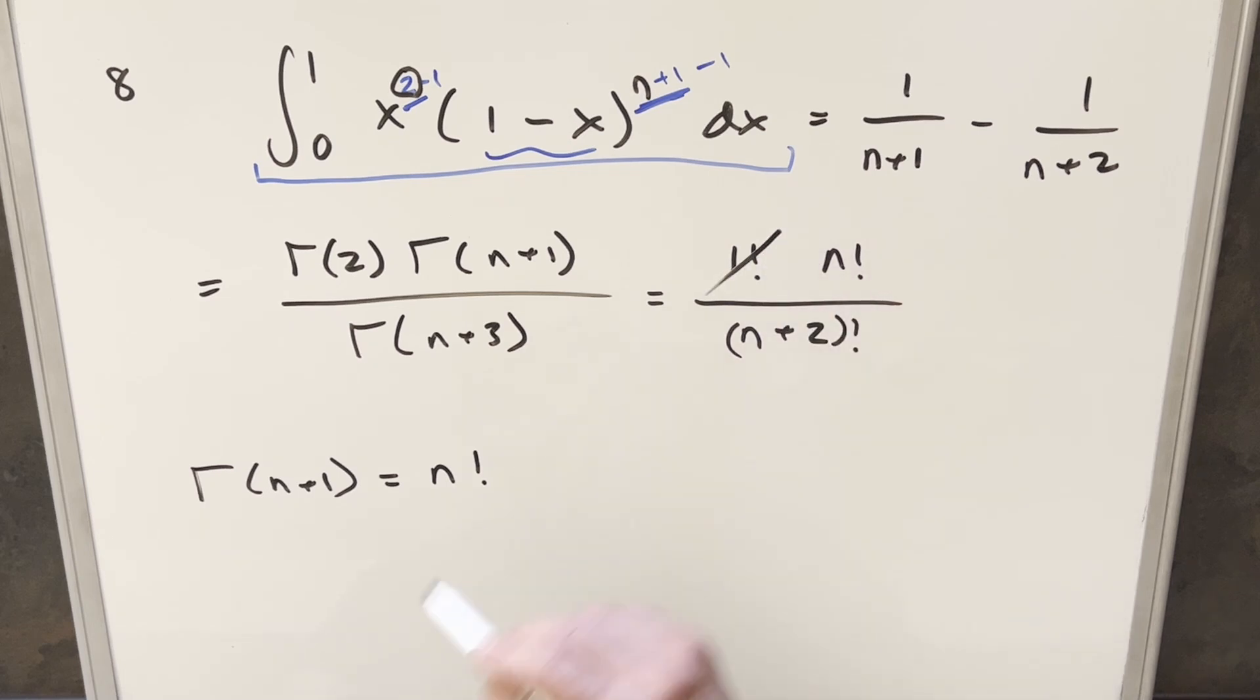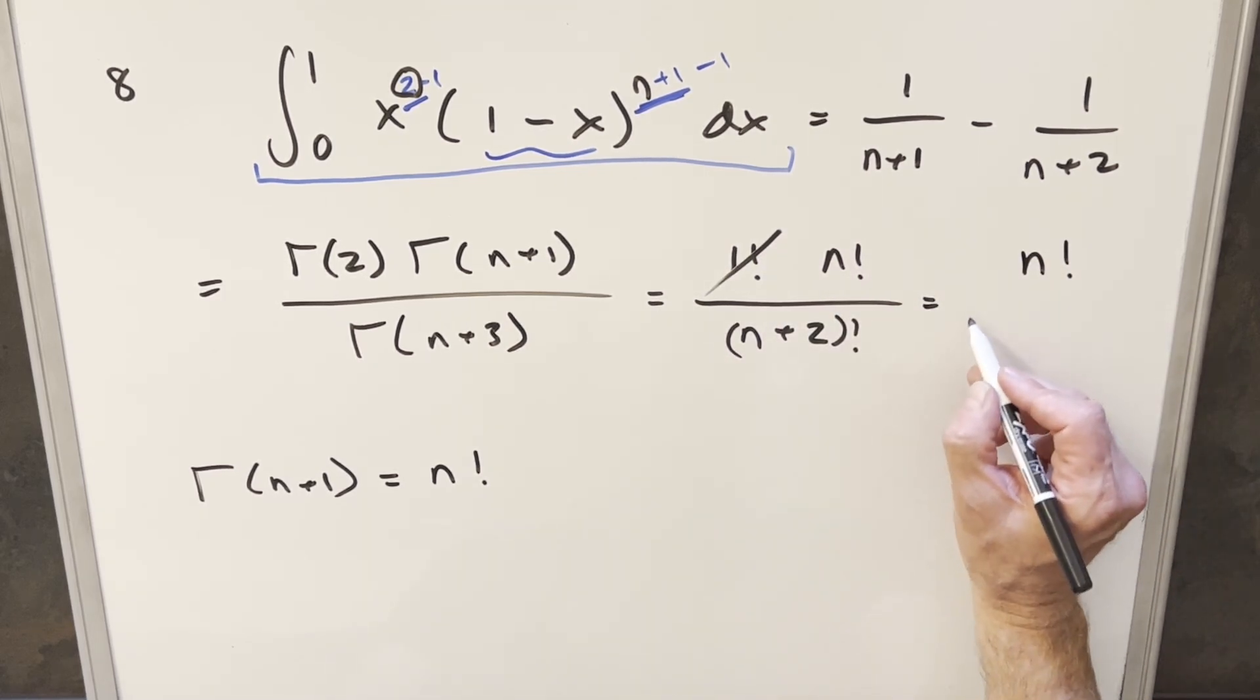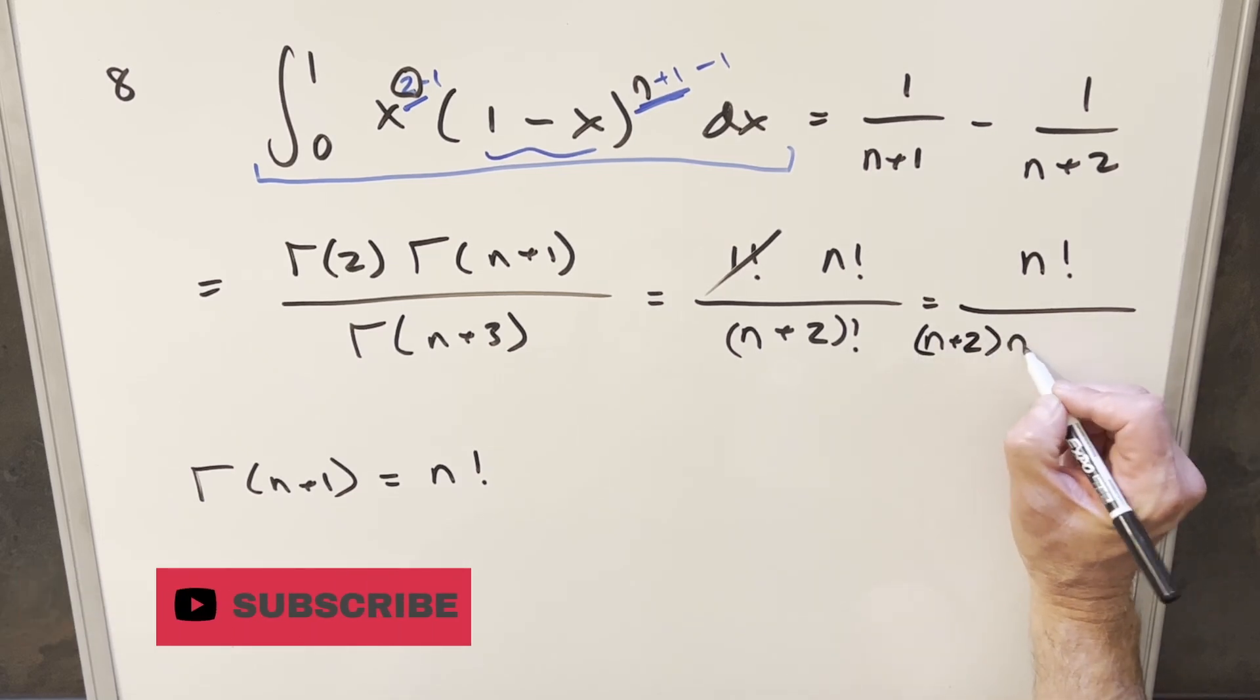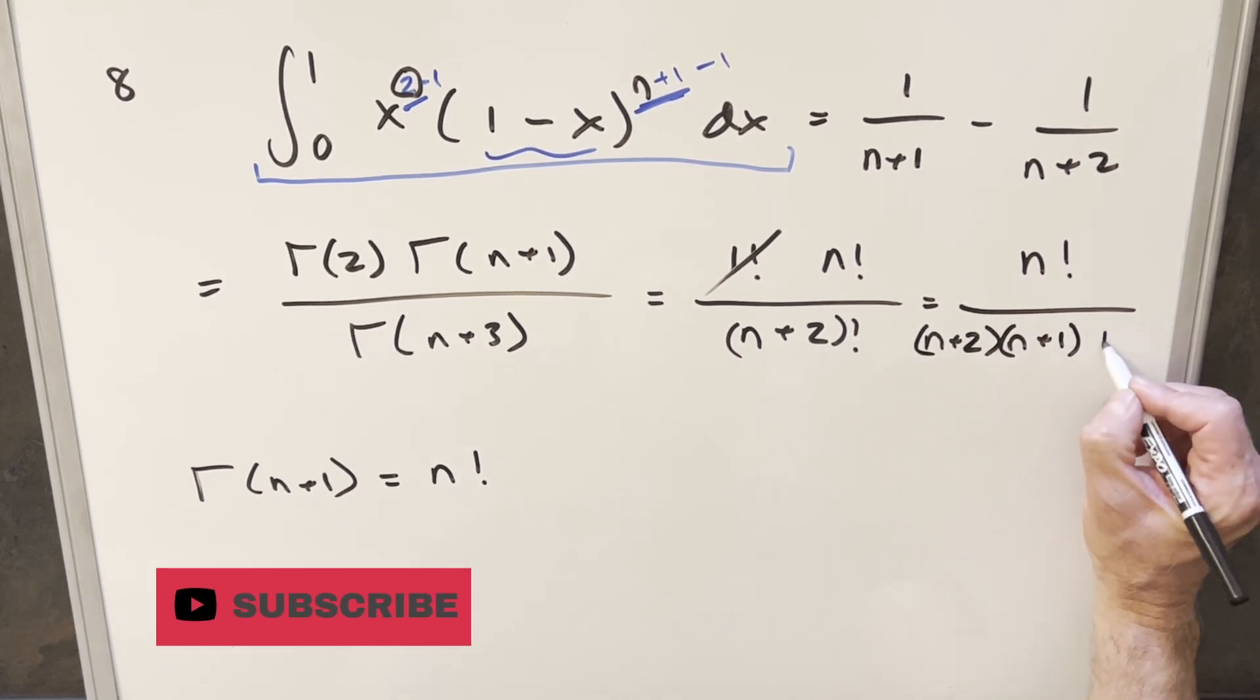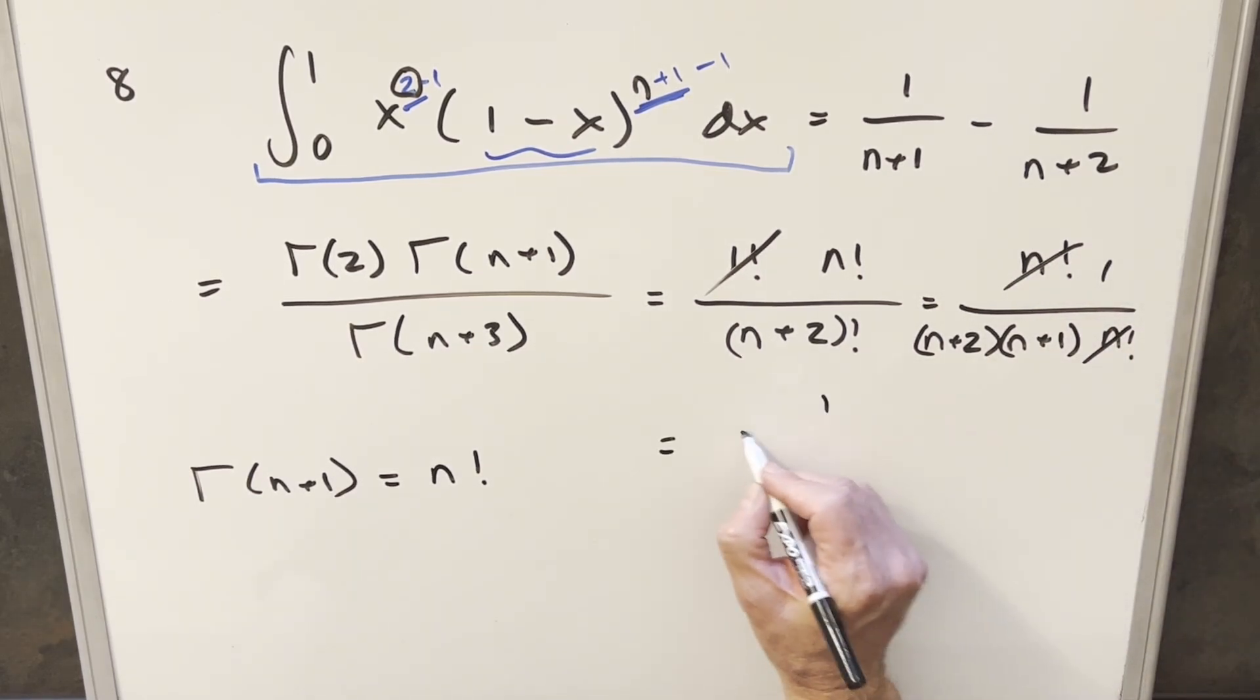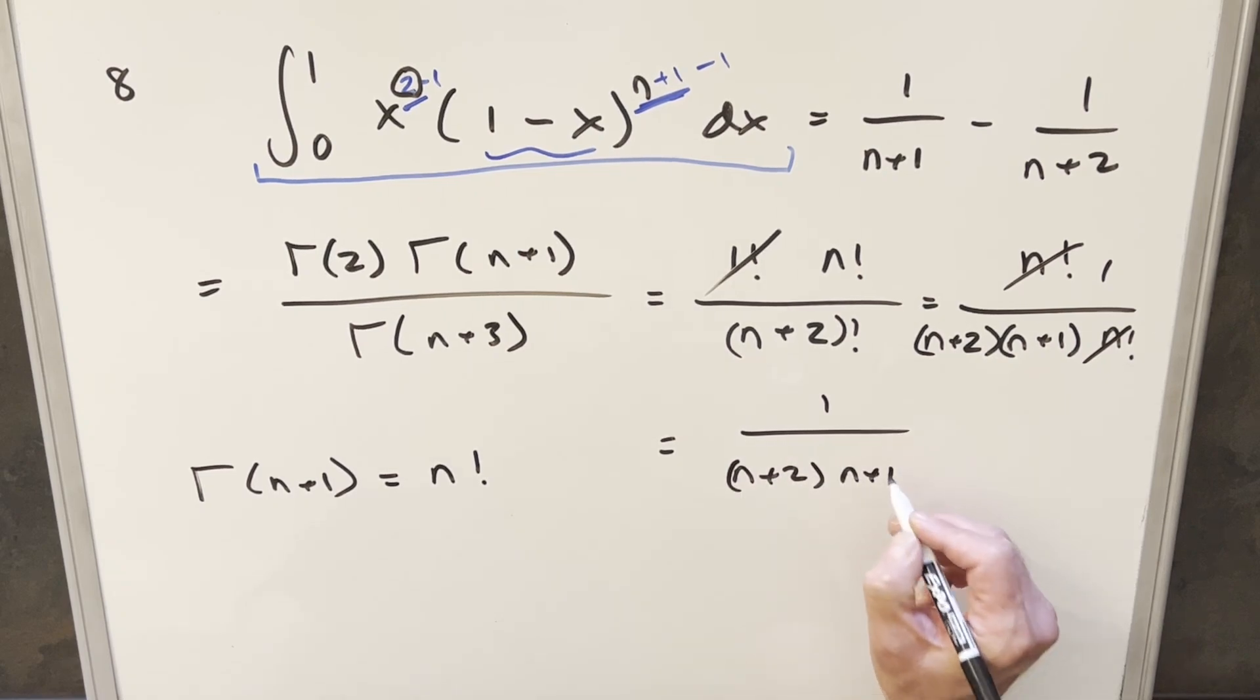1 factorial is just 1. We don't have to worry about that. Copy over n factorial. For n plus 2 factorial, I can break this up. I can write it as n plus 2 times n plus 1 times n factorial. n factorials cancel. And so we're left with our final solution of just 1 over n plus 2 times n plus 1.